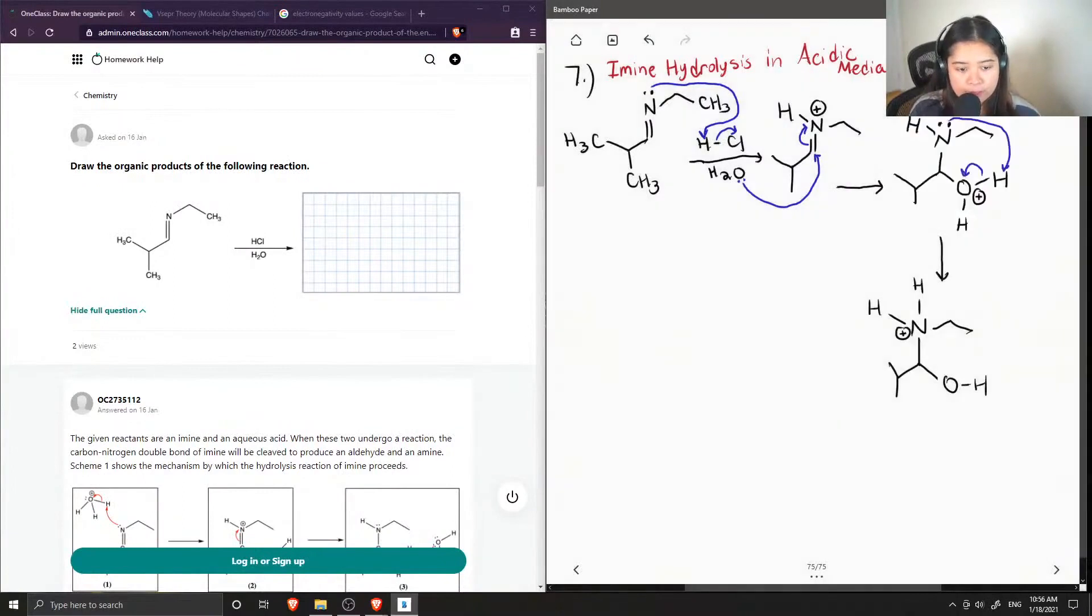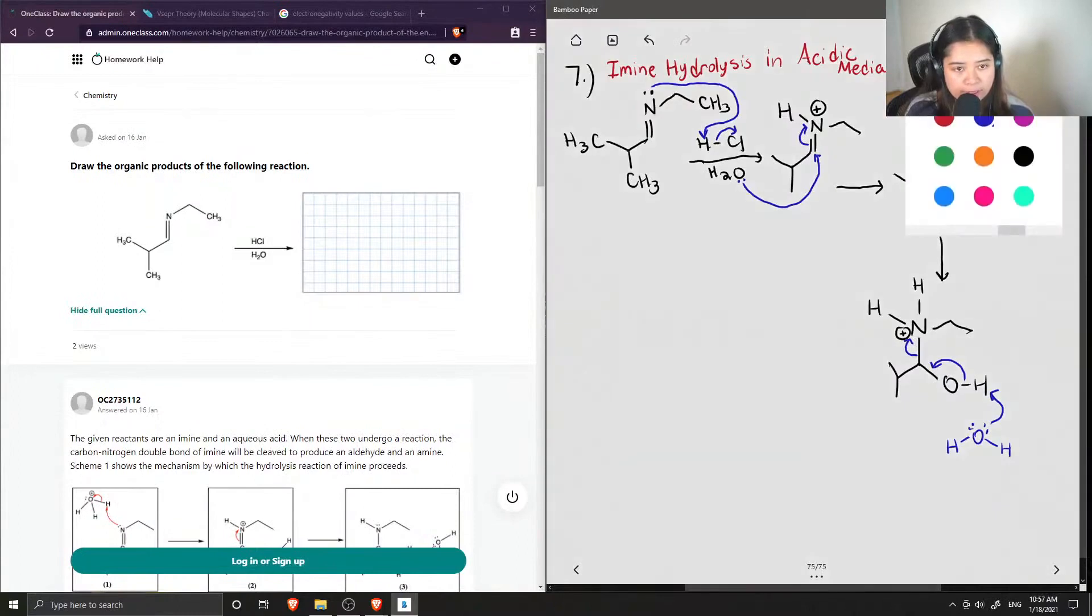And what happens next is another water molecule comes in and takes one of the hydrogens from the alcohol group forming a double bond here. And it kicks off this entire positively charged nitrogen group.